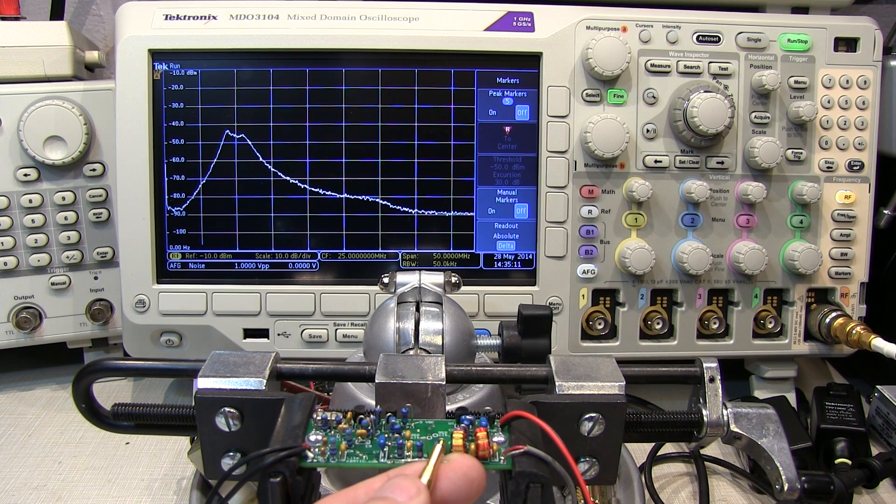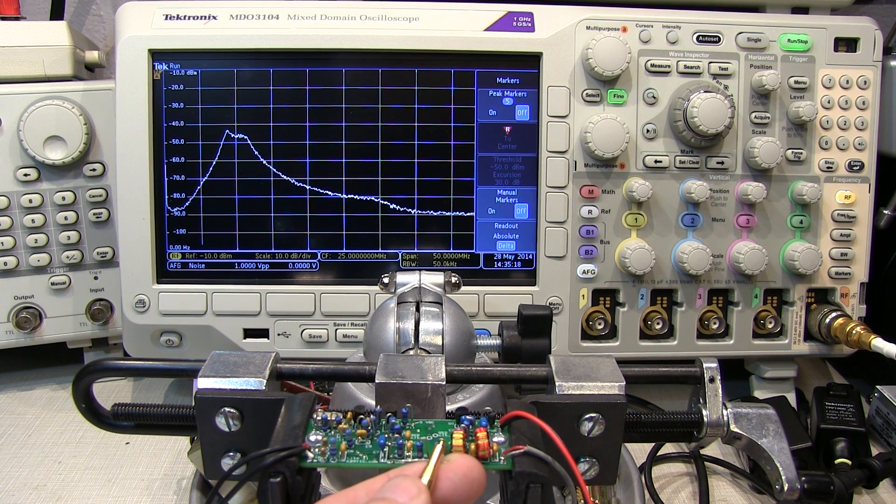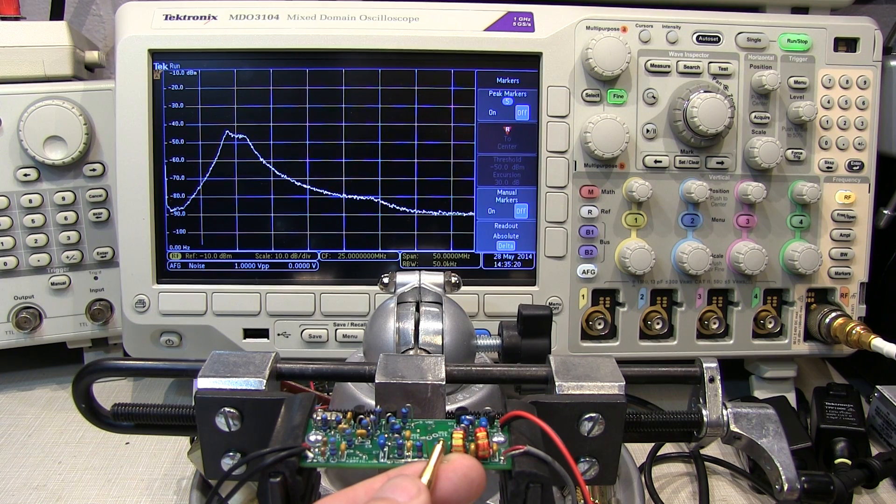So that's a real quick view of how to use a noise source and a spectrum analyzer to very quickly get a picture of the shape of a bandpass filter. Thanks again for watching.